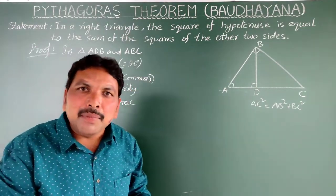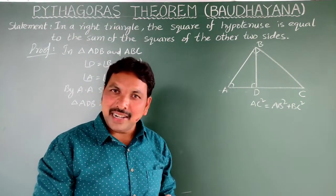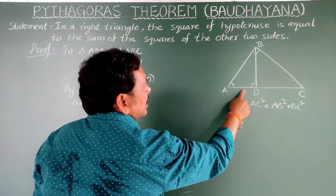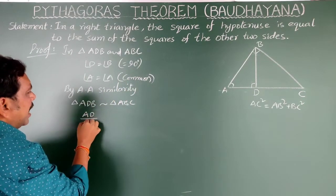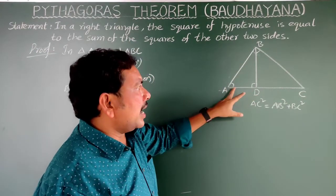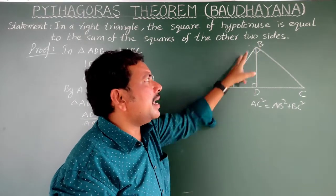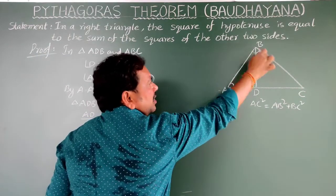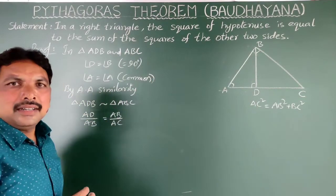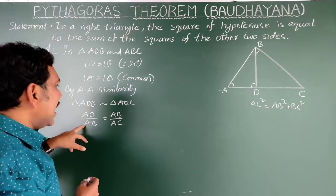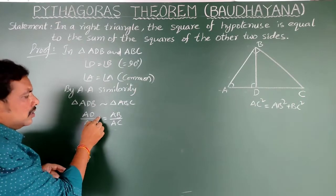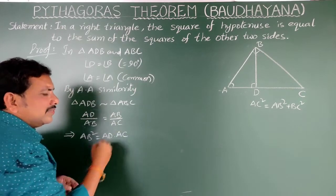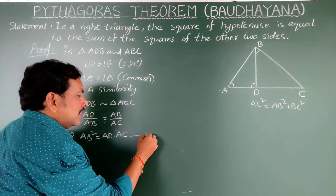If two triangles are similar, then the corresponding sides are in the same ratio. So in these two similar triangles, AD/AB = AB/AC. From this, AB × AB = AD × AC, which means AB² = AD × AC. Consider this as equation number 1.